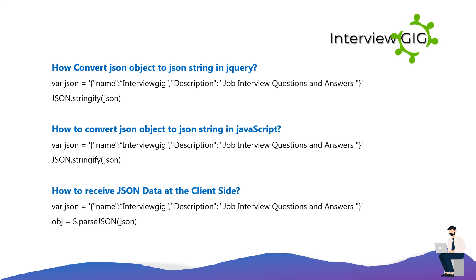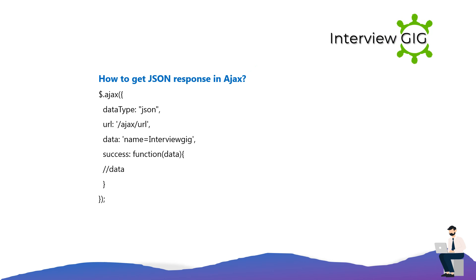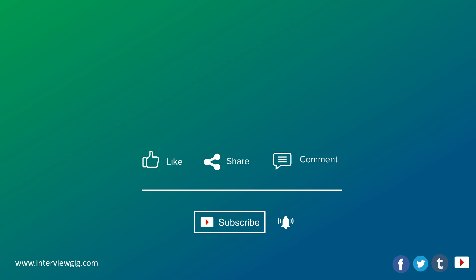How to receive JSON data at the client side: var json = '{"name":"InterviewGig","description":"Job Interview Questions and Answers"}'; obj = $.parseJSON(json). How to get JSON response in AJAX: $.ajax({ dataType: 'json', url: '/ajax-url', data: { name: 'InterviewGig' }, success: function(data) { // data } }). Like, share, and comment.